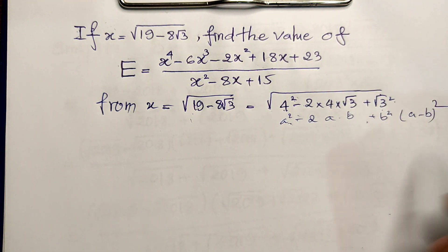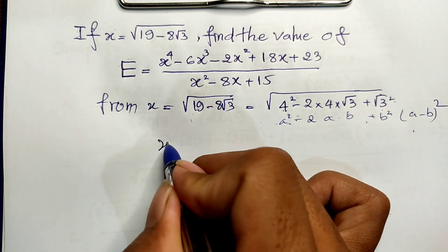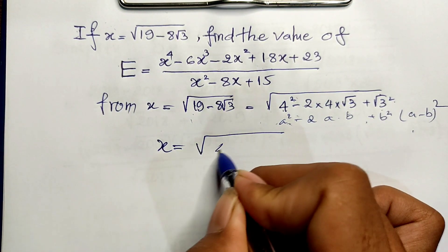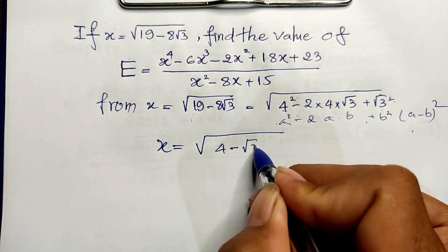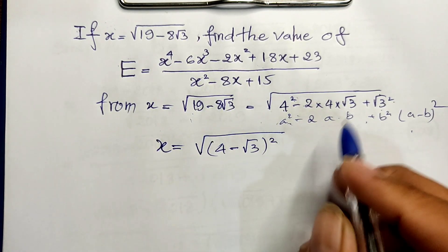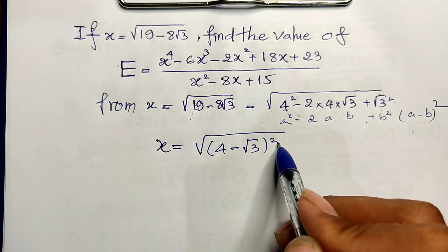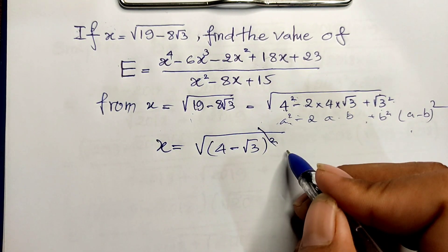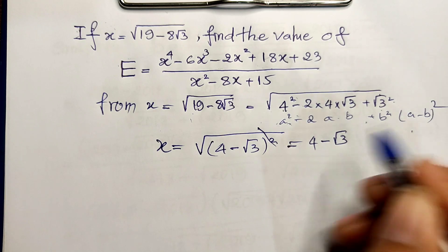Therefore, x equals the square root of (4 minus √3) squared. Simplifying the square root and the square, I get x equals 4 minus √3.